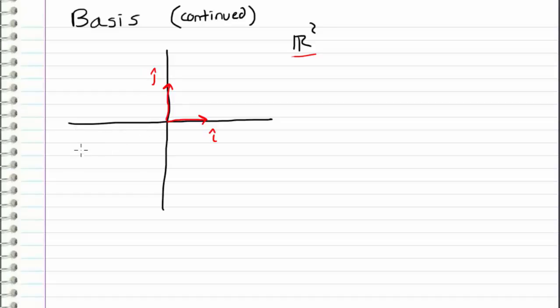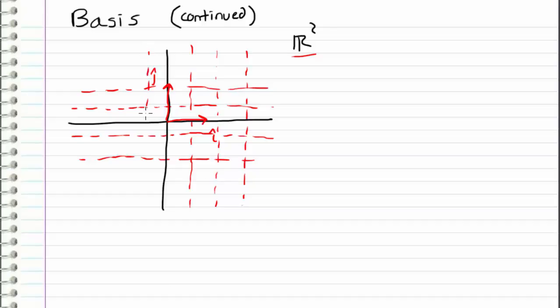Another way that we can think about a basis is like a coordinate system. So these two basis vectors create a coordinate system that span this entire space. So let me draw this out. So basically, our coordinate system looks like a grid, where each line lies along one of the basis vectors. So this is the kind of grid we get. And since we're working with these standard basis, what we get is the Cartesian coordinate system that we are used to.